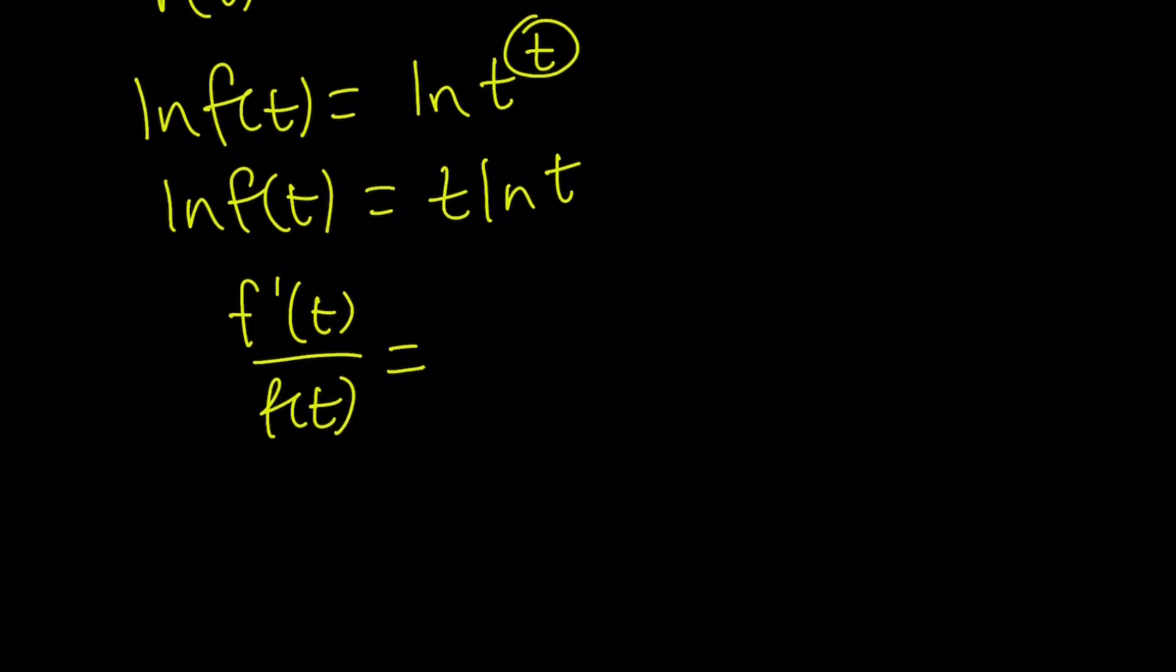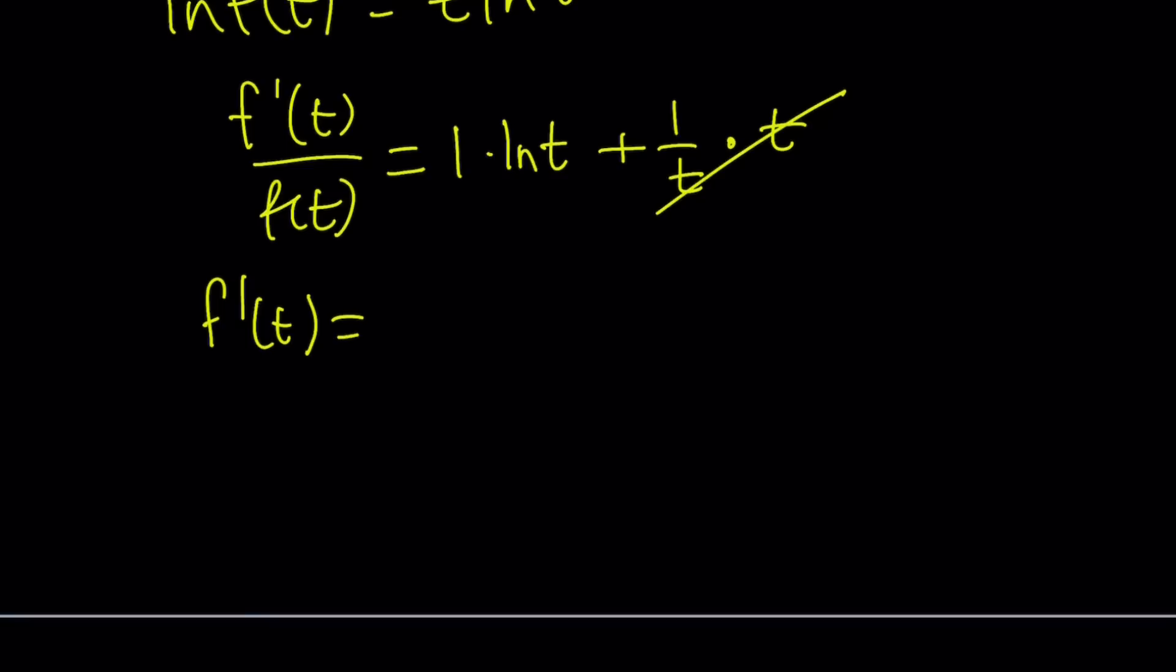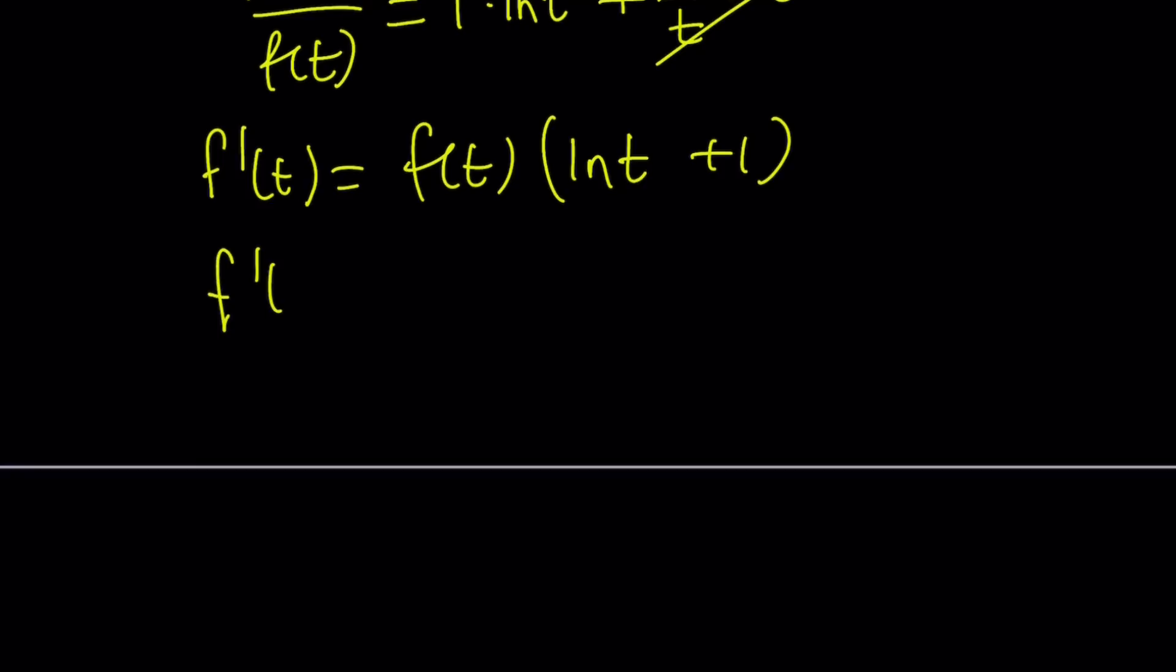And on the right-hand side, we have the product rule. How do you differentiate a product like u times v? Remember the rule. The derivative of the first times the second plus the derivative of the second times the first. That is the product rule. So it's going to be the derivative of t times ln t plus the derivative of ln t, which is very special, it's 1 over t multiplied by the first term, which is t. t cancels out and we end up with f prime equals f times ln t plus 1. Now f of t is t to the t. So let's go ahead and replace it with that. And we got the derivative of t to the power t.